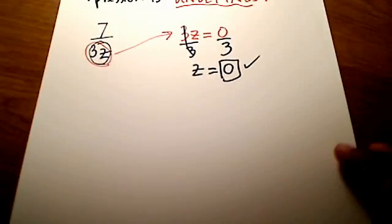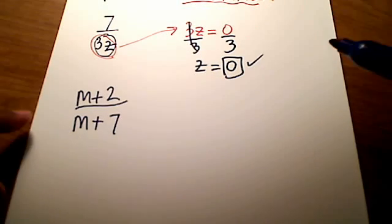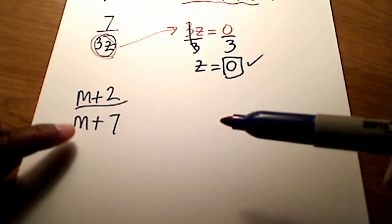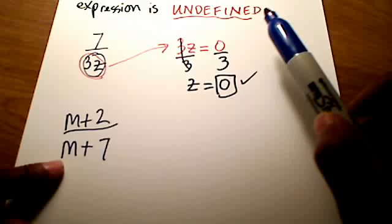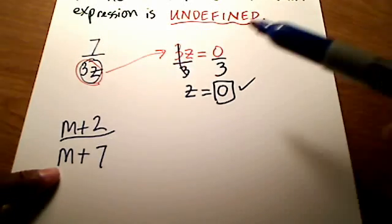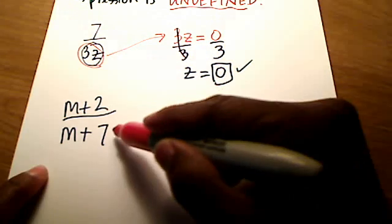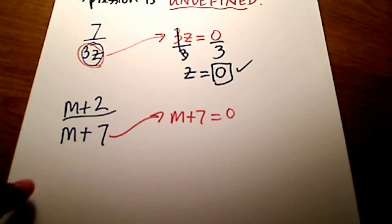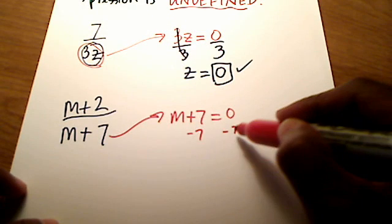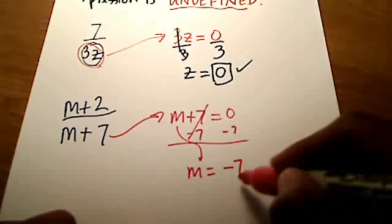How about this one? If I showed you m plus 2 over m plus 7, what value would m have to be so that my expression is undefined? Again, I'm going to ignore the numerator and focus on the denominator, set it equal to zero and solve for m. I would subtract 7 on both sides, and I've got m is equal to negative 7.